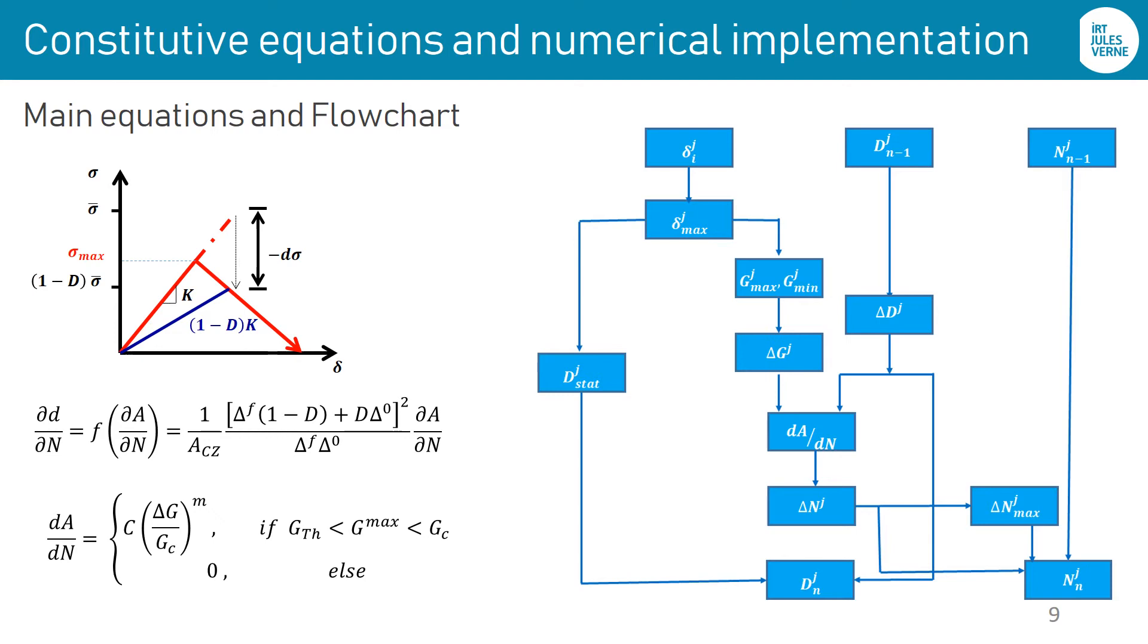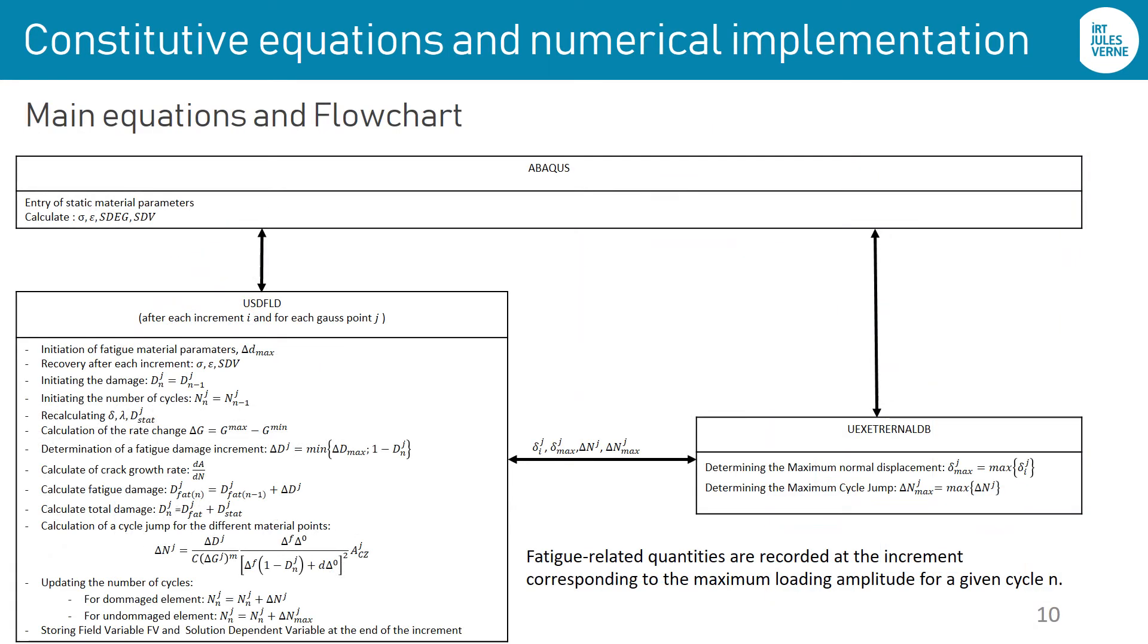Hereafter, we give more details about the model integration. The field subroutine uses parameters provided by Abaqus to calculate the total damage. Thus, several steps follow one another: a recovery step of the data calculated at the previous increment, an initialization step in the current increment, a calculation step of all the parameters necessary to calculate the fatigue damage and the cycle jump. The damage value is after sent to Abaqus as a field variable that is used to update the related material parameters.